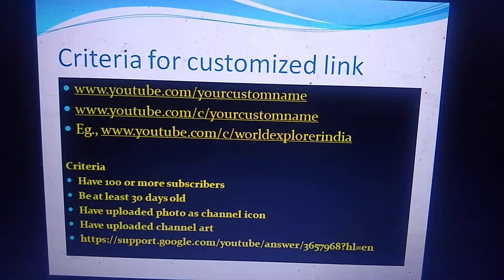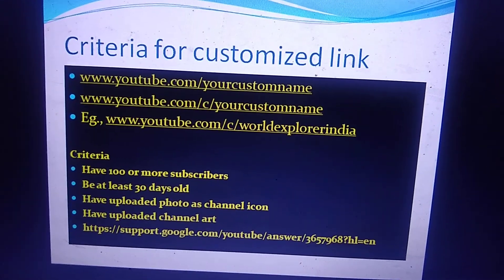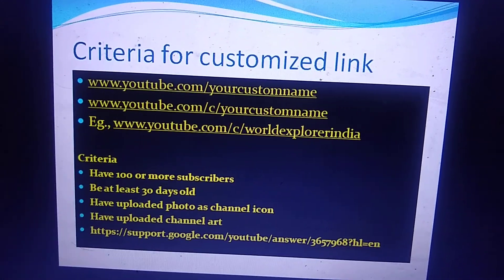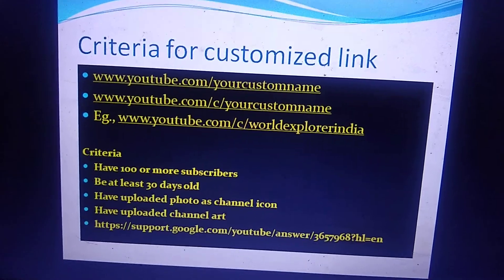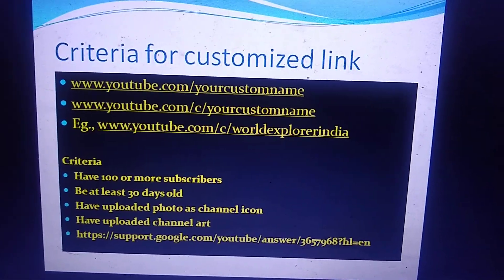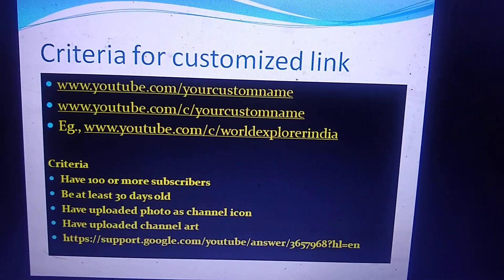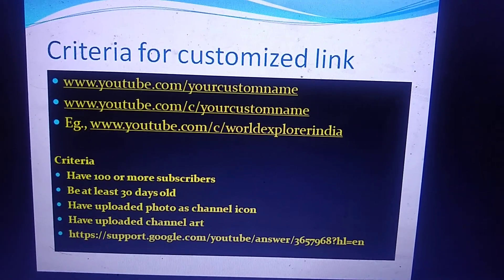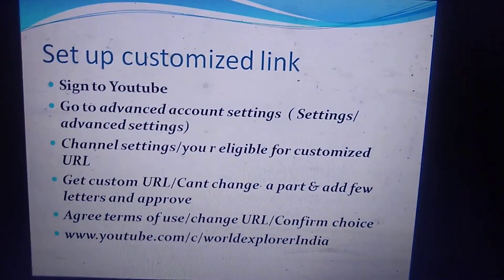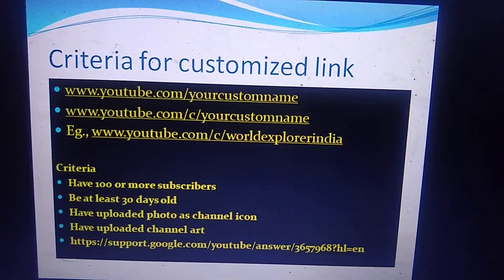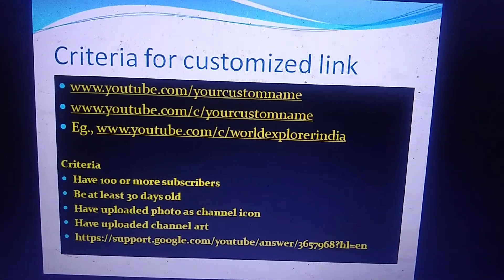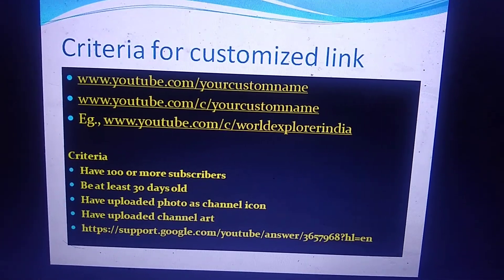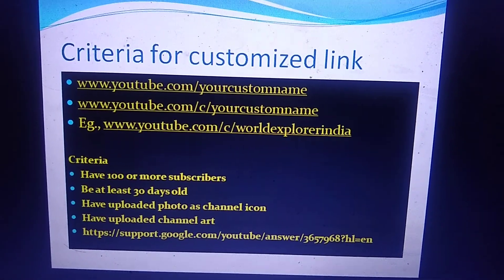What are the criteria for a customized link? The minimum criteria are: you should have 100 or more subscribers, your channel should be at least 30 days old, you should have uploaded a photo as your channel icon, and you should have uploaded channel art. You can find all these details at the link given below: https://support.google.com/youtube/answer/365968?hl=en